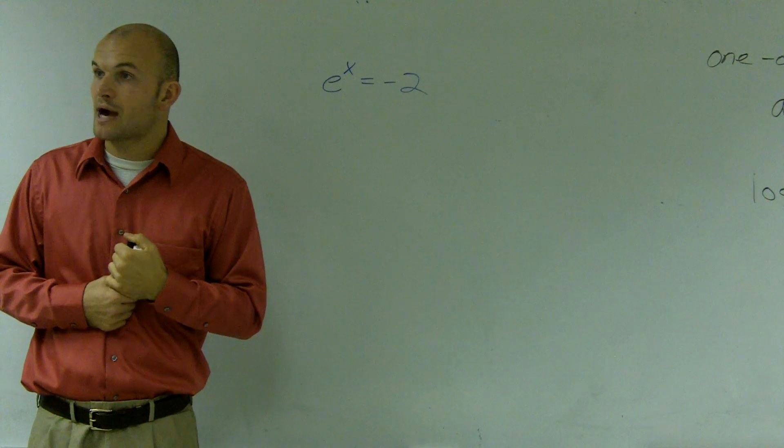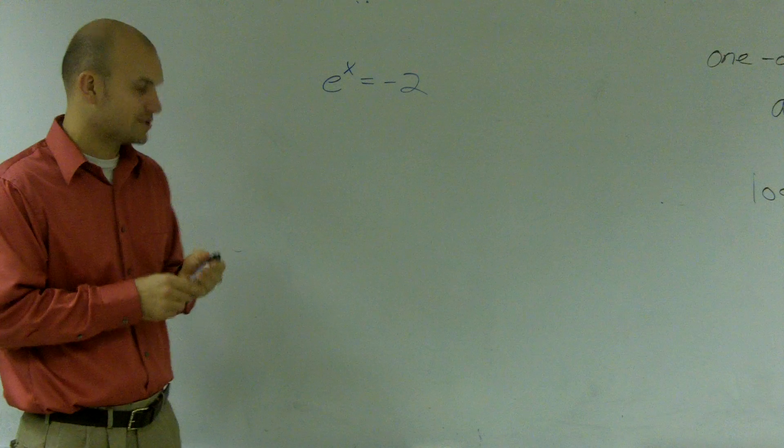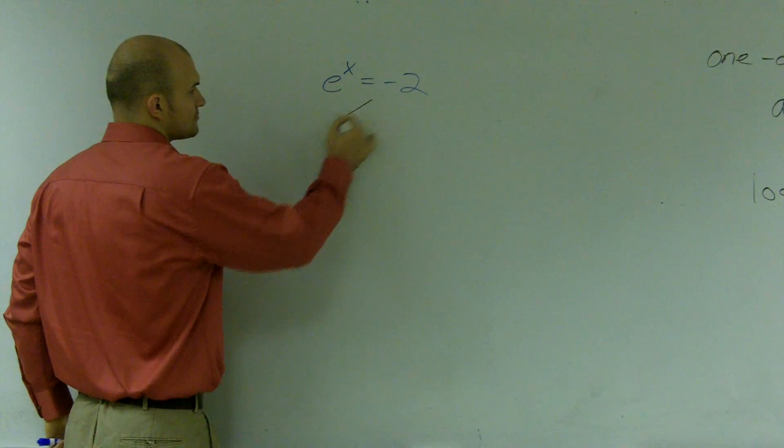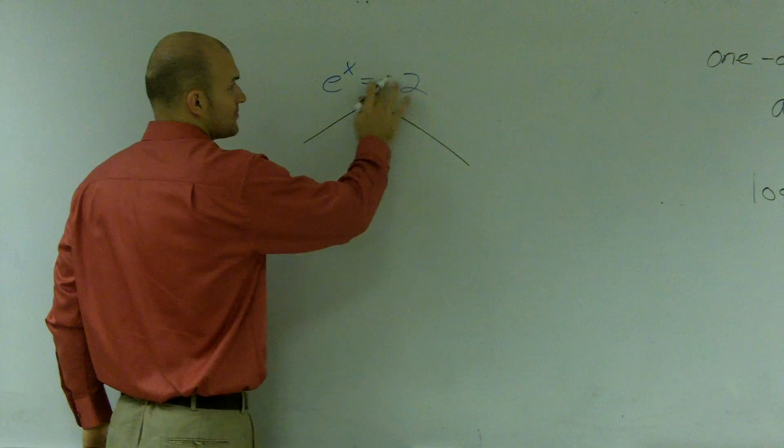However, I can use my other one-to-one property. And my other, well actually, there's two different ways to do this. One way. It's positive 2. It's a positive 2? OK.